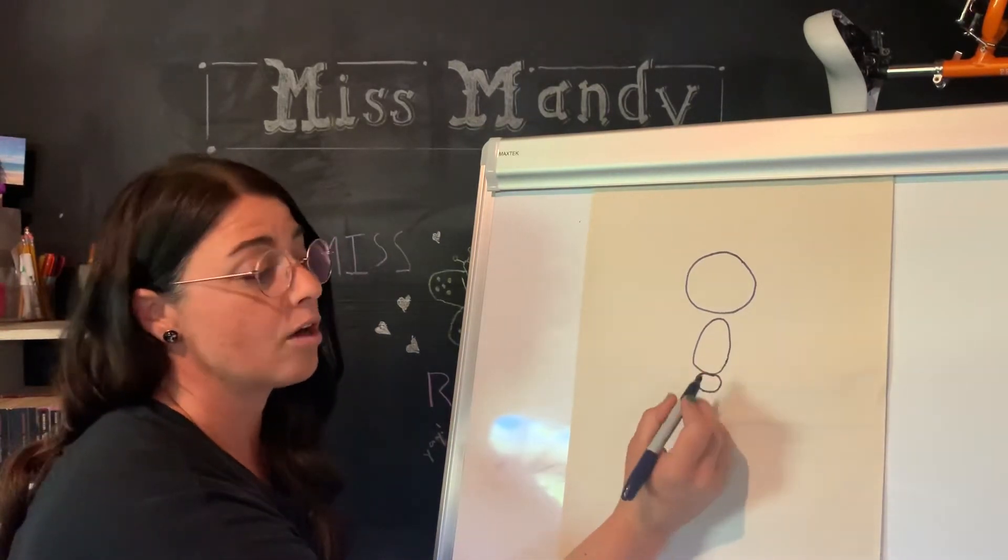Next we're going to draw some eyebrows. Right over one of your eyes, you're going to do a straight line right over the top. Then go to the right eye and do the same thing — just a straight line. Those are your butterfly's eyebrows. Next we're going to do a smiley face. The mouth is towards the bottom of the face, so start on the left and do a smile mouth with two little lines at the ends.